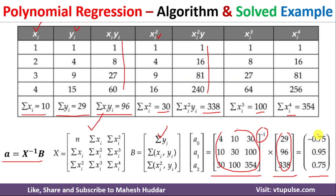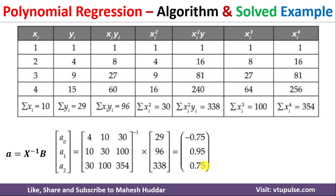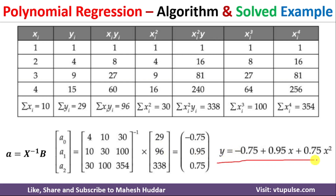The resulting matrix gives a0 as the first value, a1 as the second, and a2 as the third. Substituting these into the polynomial regression function, the final regression model is: y = -0.75 + 0.95x + 0.75x². This is the final polynomial regression model.